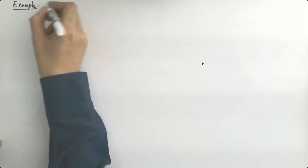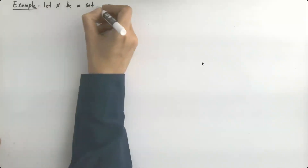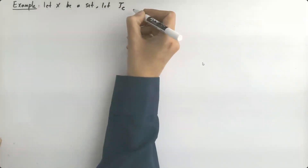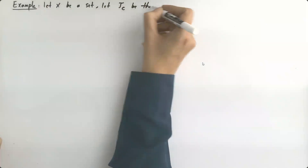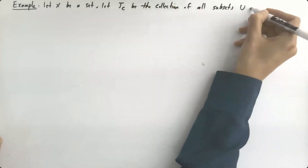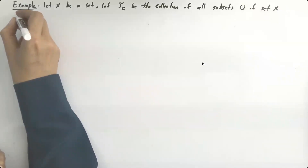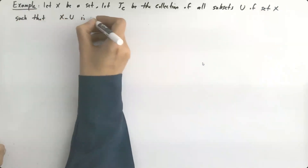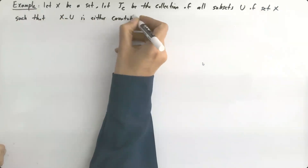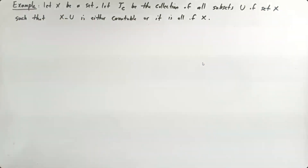Next example: we're going to define a new topology on set X. Let X be a set. Let τ_C be the collection of all subsets U of set X that satisfy the following property: the complement X minus U is either countable or it is all of X. Our goal is to show that τ_C is a topology on X.